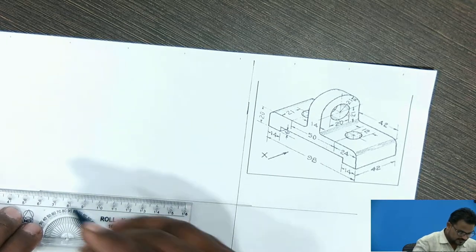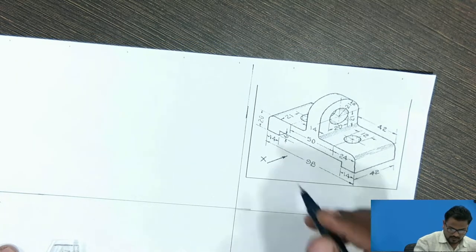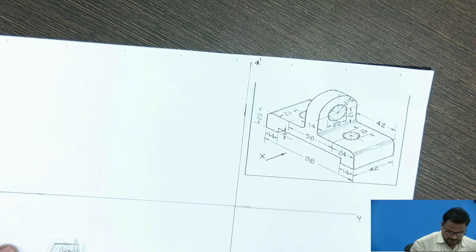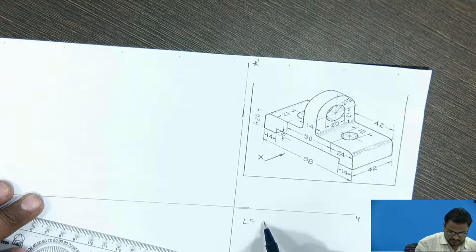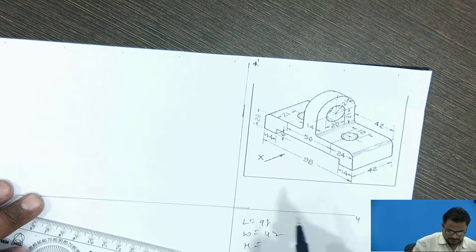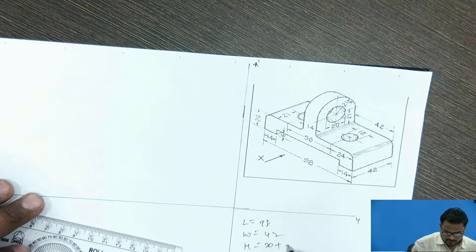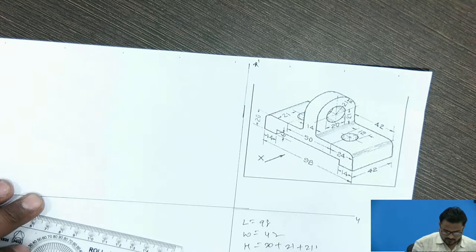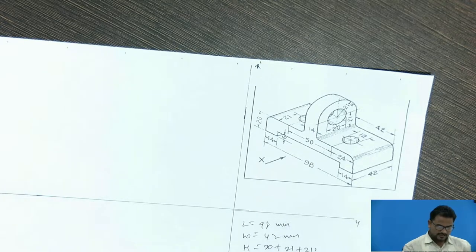The length is given, height is given. So this is X, Y, X dash and Y dash. Length is given as 98 and width is given 42 and height: this is 20, plus 21, and 21 radius is given. So total height is 42 plus 20 — 62 is the height. So 62 mm is the height, 42 mm is the width and 98 is the length.